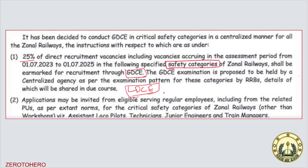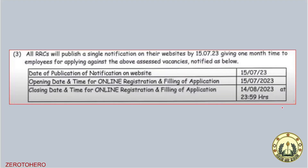As per extant norms, critical safety categories of zonal railways other than workshop: Assistant Loco Pilot, Technician, Junior Engineer, and Train Manager. This is on the main page. All RRC will publish single notifications on their website.